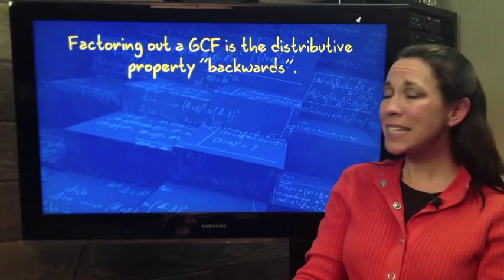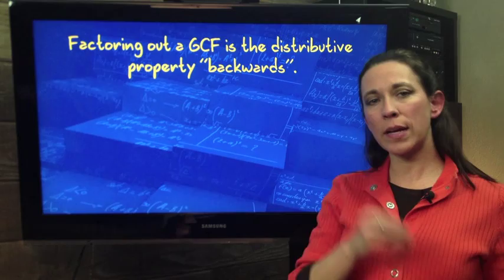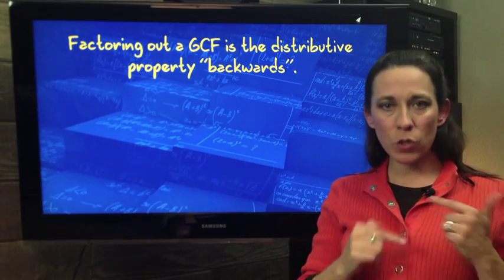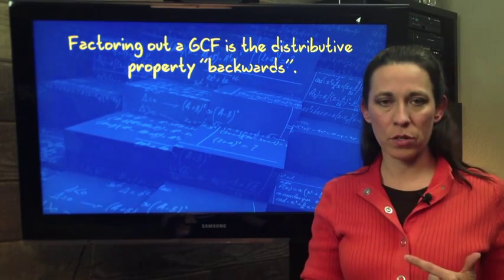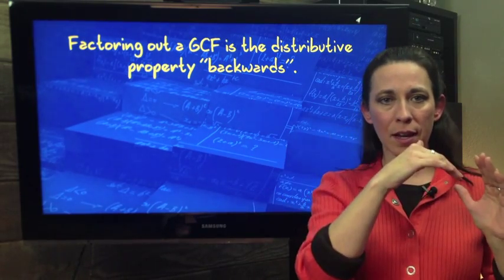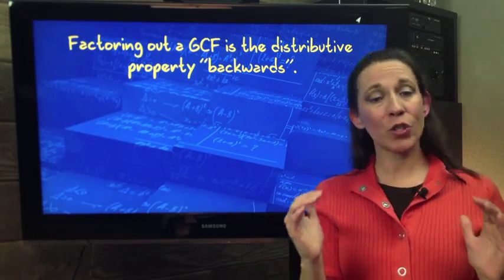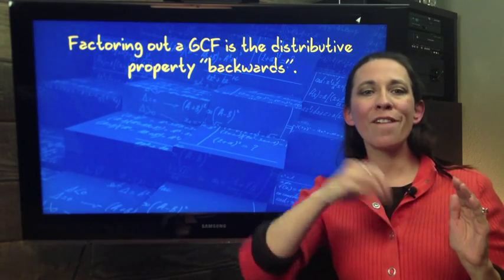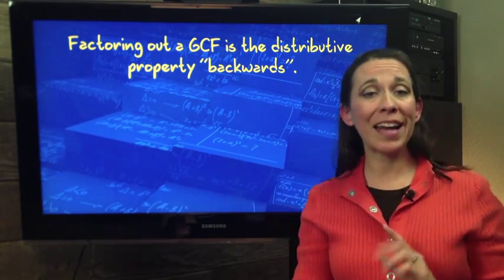The reason this is important is because you can consider factoring out the GCF like the distributive property backwards. Instead of starting with the parentheses and multiplying in, we're going to start with the trinomial or binomial, and we're going to factor out or divide out.